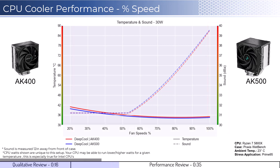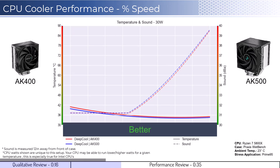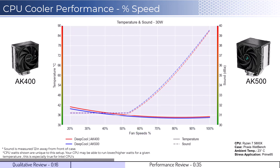As a general rule, lower is always better for the data shown. We will first look at the fan's performance on an idle CPU, which is assumed to be using 30 watts of power. When comparing the AK400 cooler in red to the AK500 cooler in blue, both coolers perform similarly across the board in terms of cooling. Additionally, both coolers use the same fan, resulting in the same noise profile.